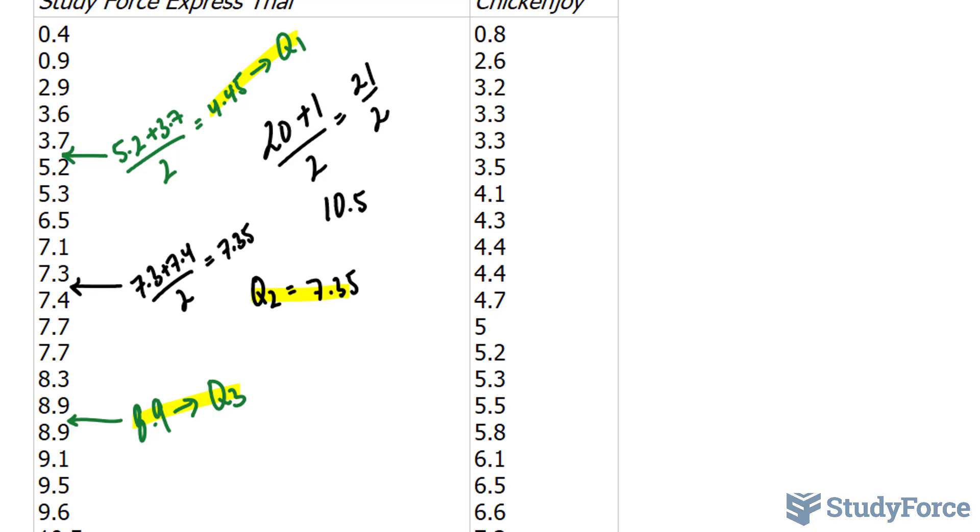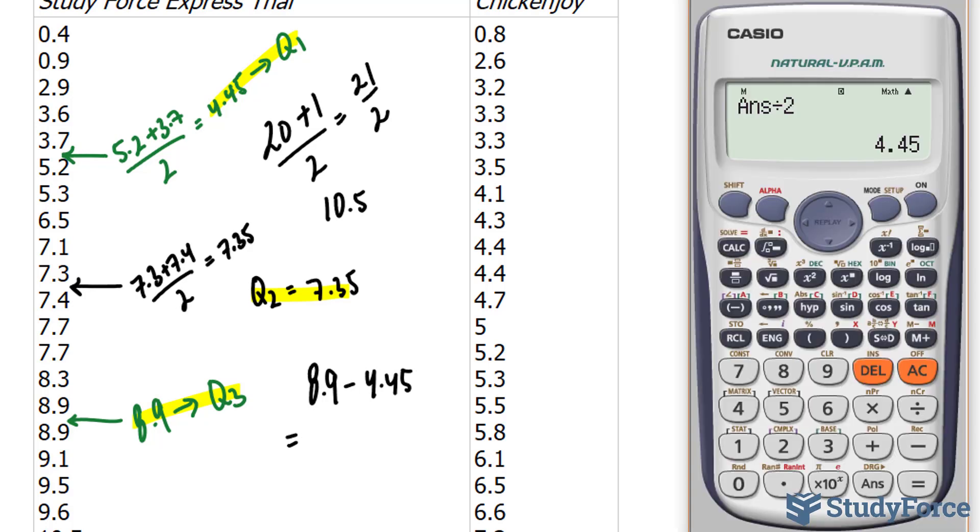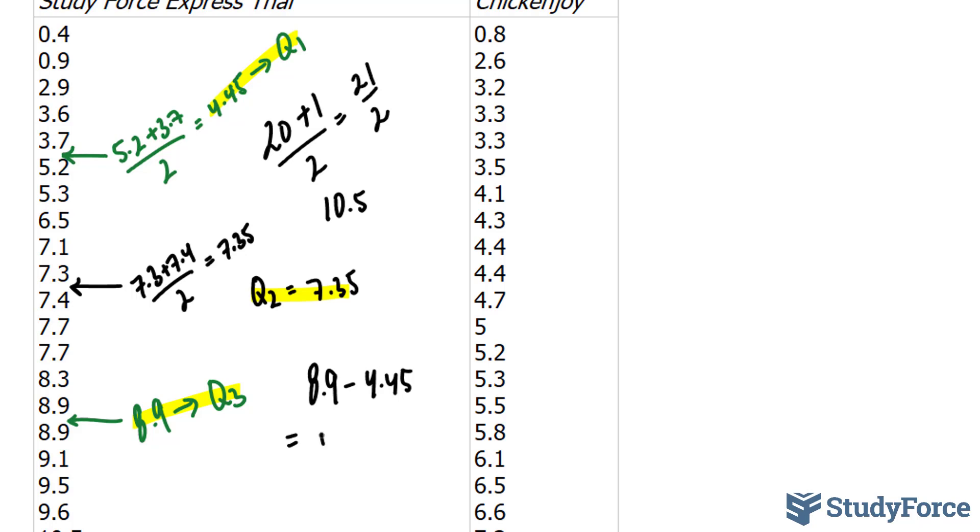So to find the interquartile range, we have to subtract Q3 from Q1. So I'm going to take 8.9 subtracted by 4.45. And the answer to this represents our range, 8.9 subtracted by 4.45. And this gives us 4.45. To conclude, the average waiting time for Study Force Express is 4.45 minutes.